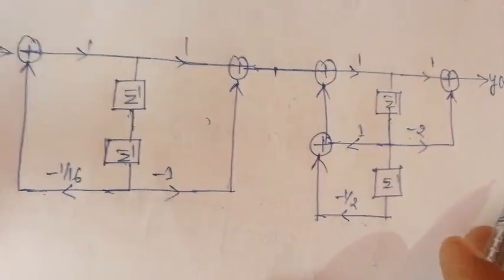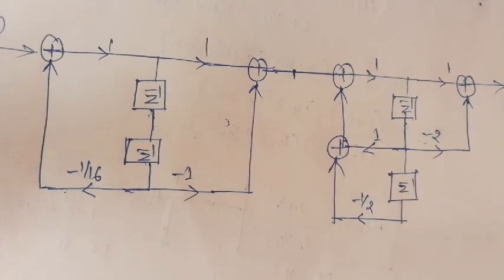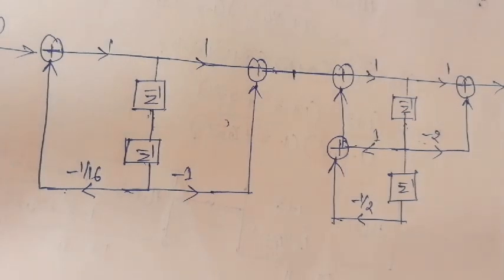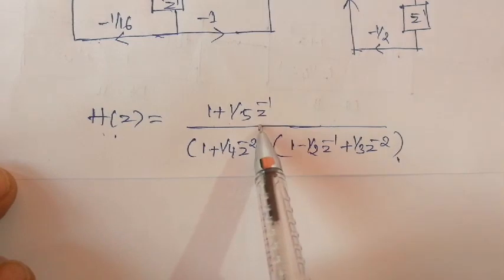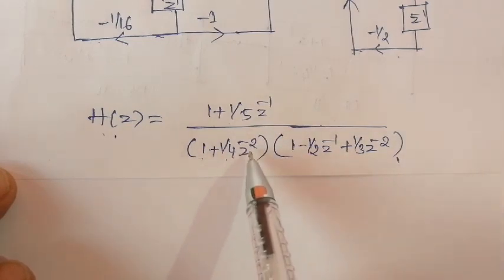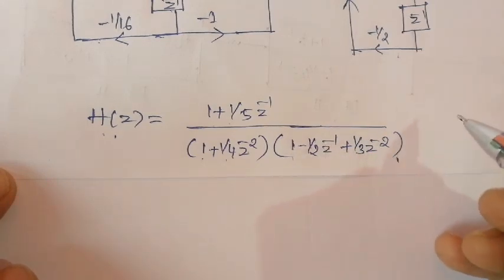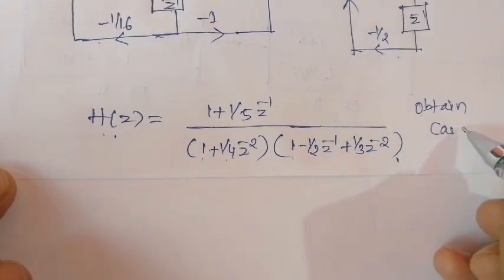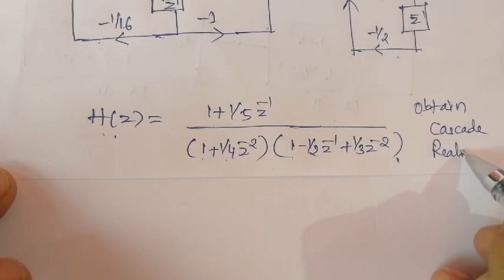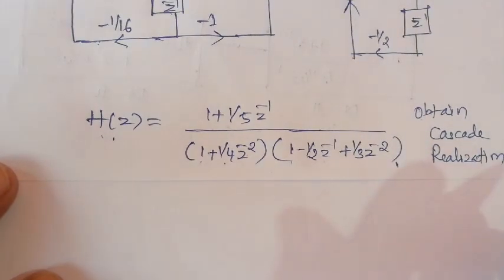Both H1 and H2 are connected in cascade, hence this is the cascade realization of the given system function H of z. As homework for practice, realize H of z equals (1 plus 1/5 z to the power minus 1) divided by (1 plus 1/4 z to the power minus 2), multiplied by (1 minus 1/2 z to the power minus 1 plus 1/3 z to the power minus 2). Obtain the cascade realization for this system function and put your answer in the comment box. Thank you very much.